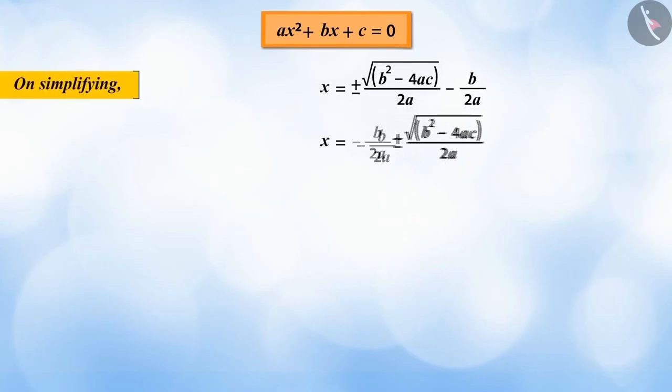On simplifying this, we can see that we get x is equal to minus b plus or minus root of b square minus 4ac by 2a, which is represented in equation 4.